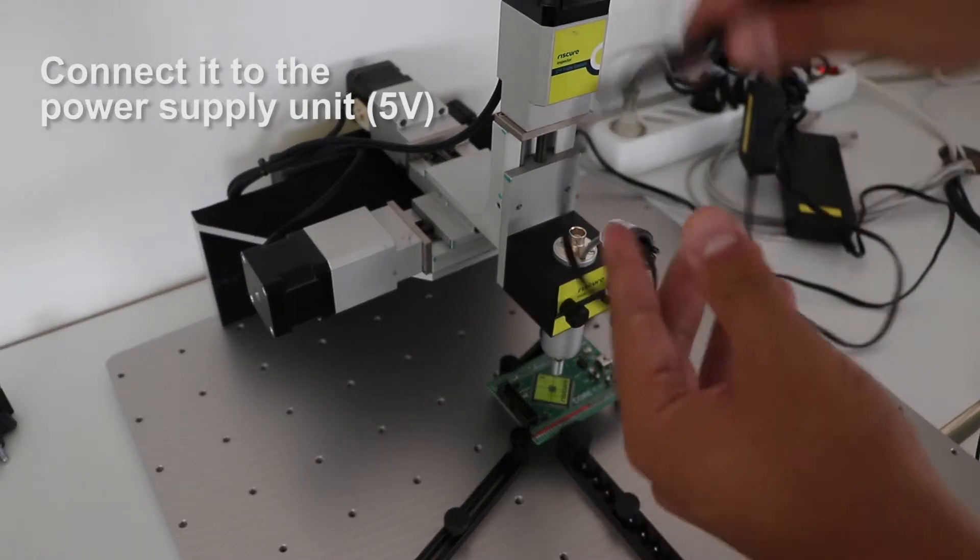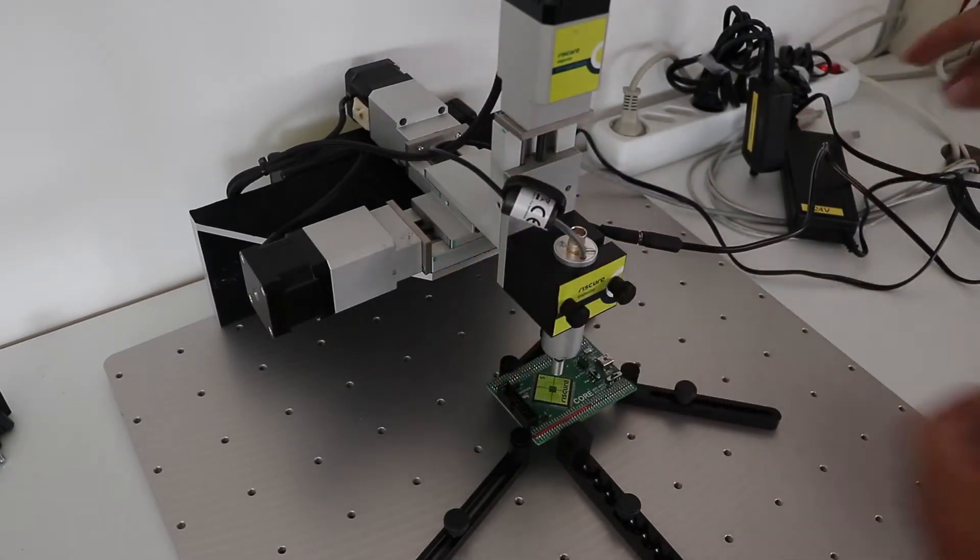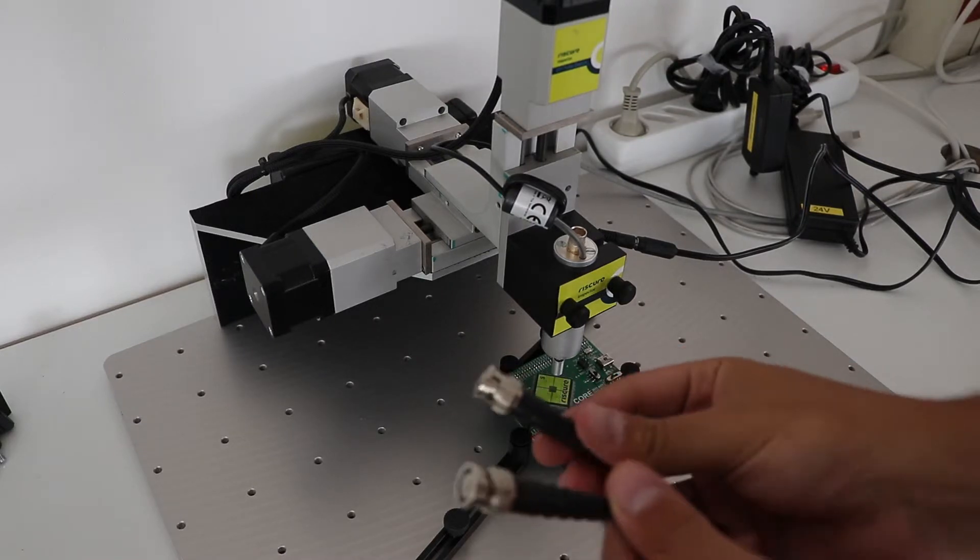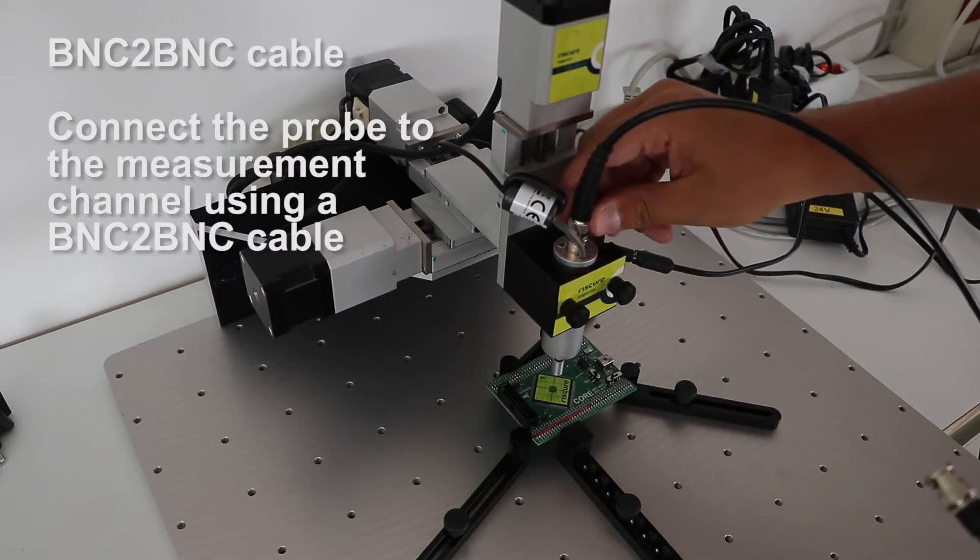Now you are free to connect it to the power. Connect it to your oscilloscope using the BNC to BNC cable.